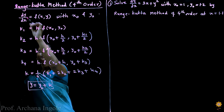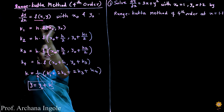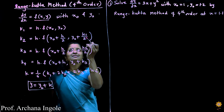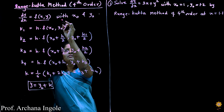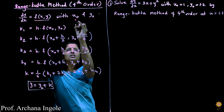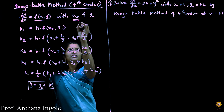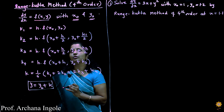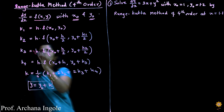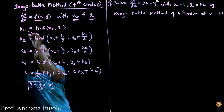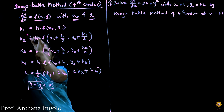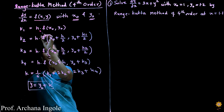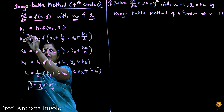In this method, dy by dx is considered as f of xy. As in the previous method, we have initial conditions denoted by x0 and y0. Here we have to find out the four constants k1, k2, k3, and k4 using these formulas.